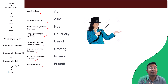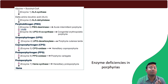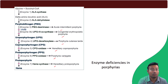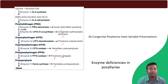Lastly, the diseases caused sequentially by deficiency of these enzymes are: Acute Intermittent Porphyria, Congenital Erythropoietic Porphyria, Porphyria Cutanea Tarda, Hereditary Coproporphyria, Variegate Porphyria (also known as Protoporphyria Variegata), and Hereditary Protoporphyria. The mnemonic for these is: 'All Congenital Porphyrias Have Variable Presentation.'